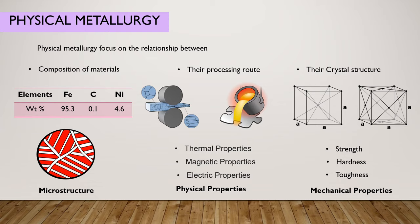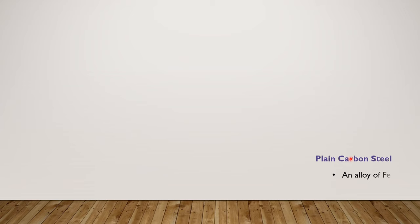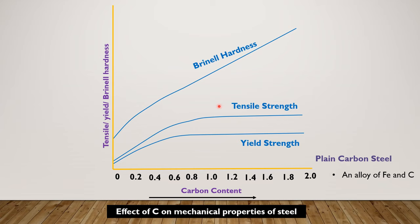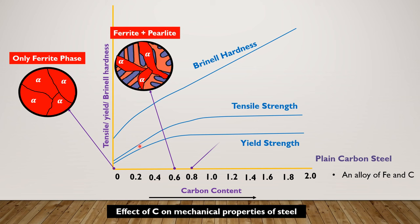Let's say we have plain carbon steel, which is an alloy of iron and carbon. Adjusting the carbon content is the simplest way to change the mechanical properties of steel. This graph clearly shows how plain carbon steel is changing its hardness, tensile strength, and yield strength as the carbon content is increasing.